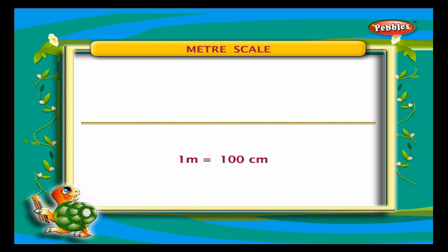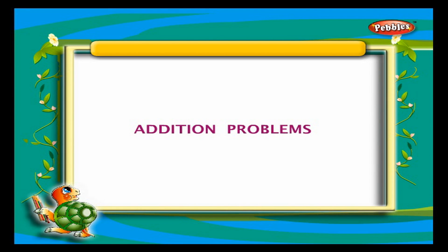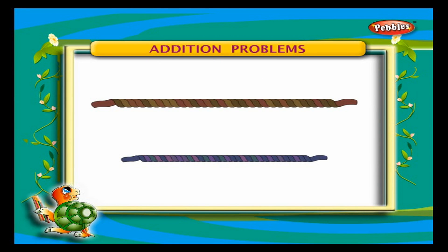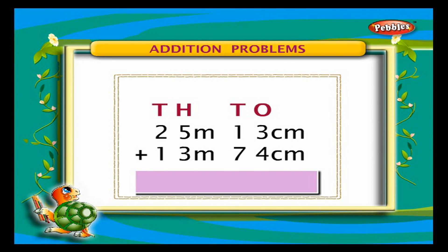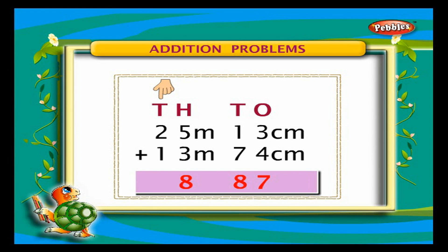Addition problems: Let us add the length of two ropes. One rope has a length of 25 meters and 13 centimeters, and the other rope has a length of 13 meters and 74 centimeters. Arrange the lengths in a column. Add ones first — we get 7. Add tens — we get 8. Add hundreds — we get 8, and thousands — we get 3.